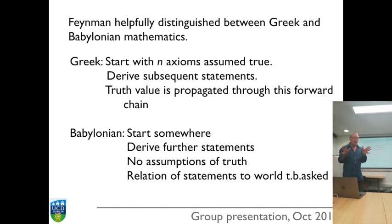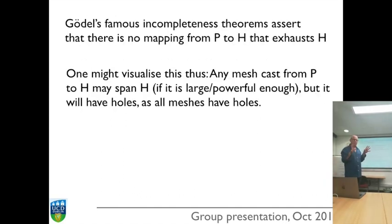The Babylonian approach, which I think more captures the spirit of actual mathematics, is you just start somewhere with some bunch of statements and you derive other statements. There's no assumptions of truth, that's all left still to be discussed. You just ask where can we go from here. Is everyone getting this so far?